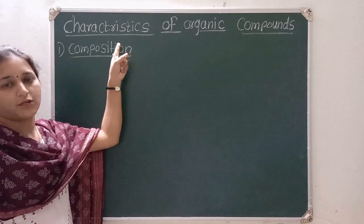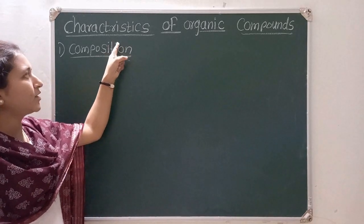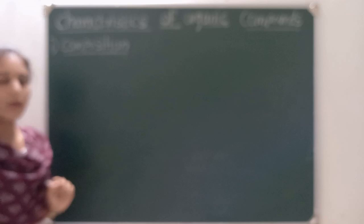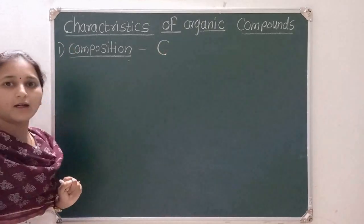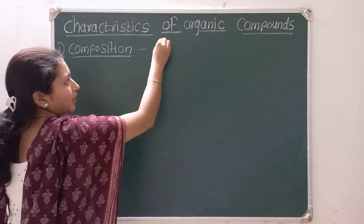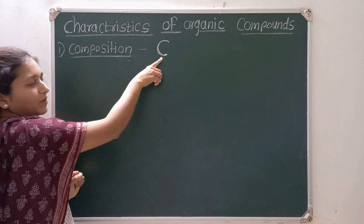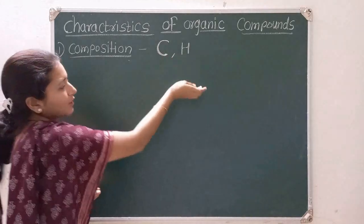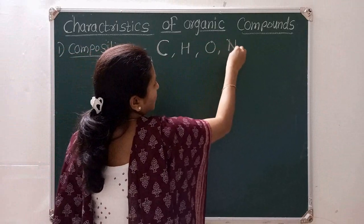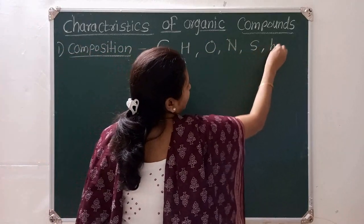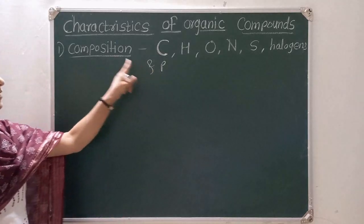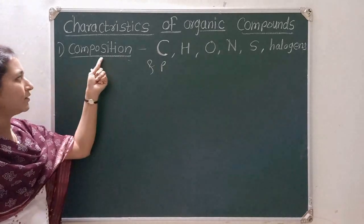Now let us start the second point — characteristics of organic compounds. The first characteristic is composition. Organic compounds contain which elements? The main element is carbon, represented as C. Along with carbon, there is hydrogen, then oxygen, nitrogen, sulfur, halogens and phosphorus. These elements are present in organic compounds — that is called the composition.